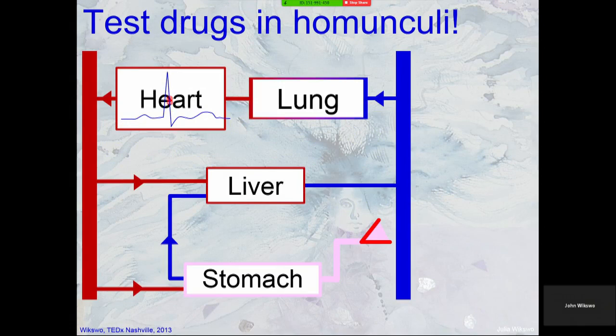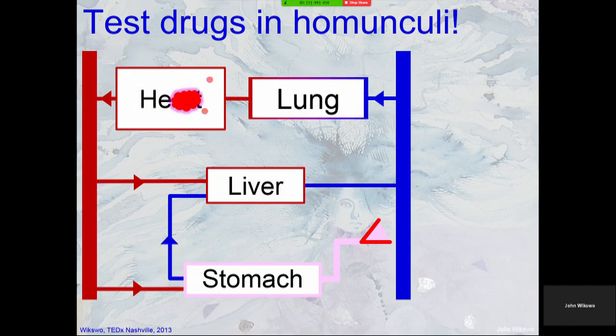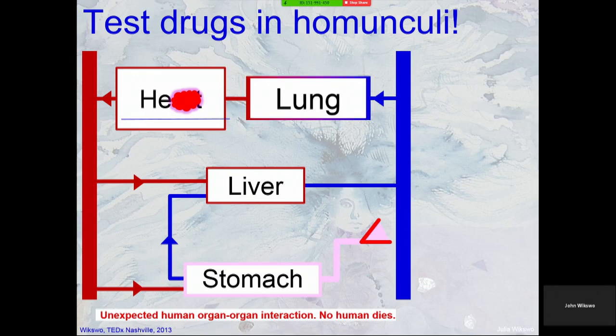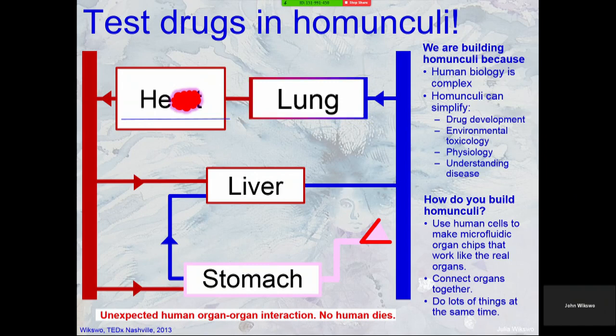With these systems, you build a homunculus with a heart having electrical activity, a breathing lung, a liver, and a stomach. You ingest a drug — it goes into the stomach, dissolves, goes to the liver and is metabolized, moves through the lung into the heart, and suddenly causes a cardiotoxicity. Luckily, no human dies. We're basically building homunculi because biology is complex, and in theory the construction is simple: take human cells, make an organ, connect the organs, and do lots of things at once.